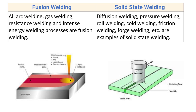Examples of fusion welding include all arc welding processes (such as tungsten arc welding, manual metal arc welding, gas metal arc welding, flux core arc welding), gas welding (such as oxy-acetylene welding), resistance welding, and intense energy processes like laser beam welding and electron beam welding. Examples of solid state welding include diffusion welding, pressure welding, roll welding, cold welding, friction welding, and forge welding. This concludes the differences between fusion welding and solid state welding.